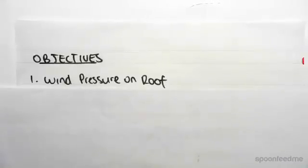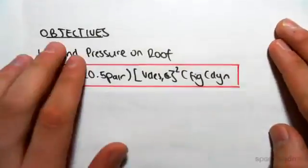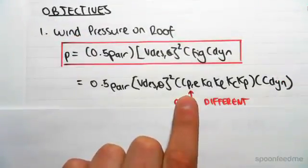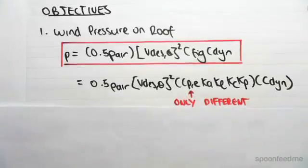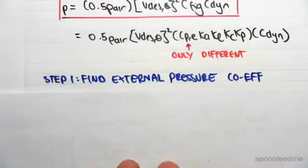Hey guys, the objective of this video is to find the wind pressure on the roof. Now the pressure formula is the exact same we've been working with, and once again the only difference is the C lowercase p comma e value.